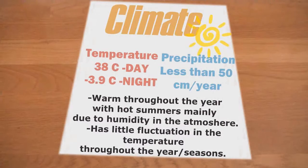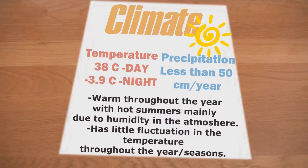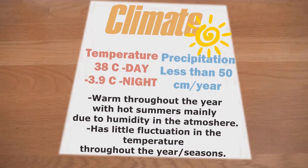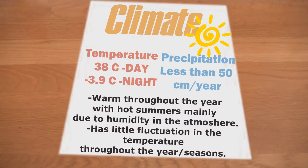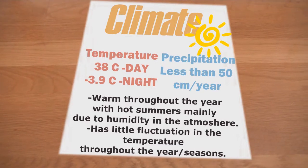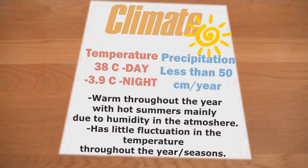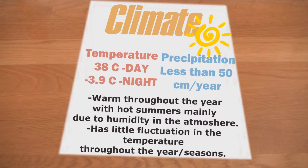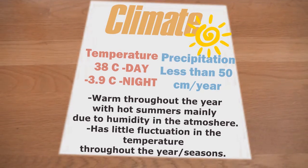The climate of the desert: in the desert, daytime temperature averages 38 degrees Celsius while at night it is negative 3.9 degrees Celsius, and the precipitation is less than 50 centimeters per year. Normally it is warm throughout the year but comes with hot summers due to the low humidity in the atmosphere. Also, it has little fluctuation in temperature throughout the year or seasons — in other words, it does not change much.